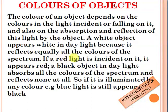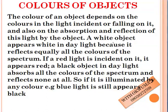If a red light is incident on a white object, it appears red. A black object in daylight absorbs all colors of the spectrum and reflects none at all, so it appears black. If it is illuminated by any color, such as blue light, it still appears black because black is a good absorber — any color that shines on a black body will be absorbed.